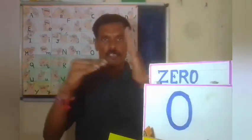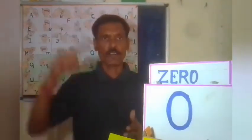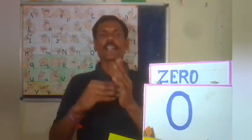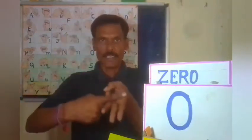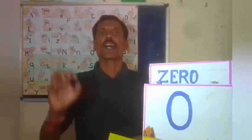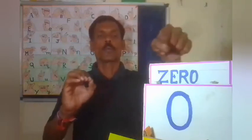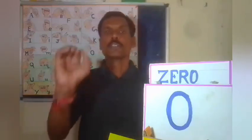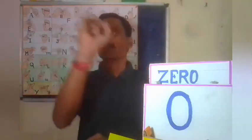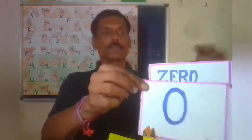Z — Z for Zero. Spelling: Z, E, R, O — Zero.